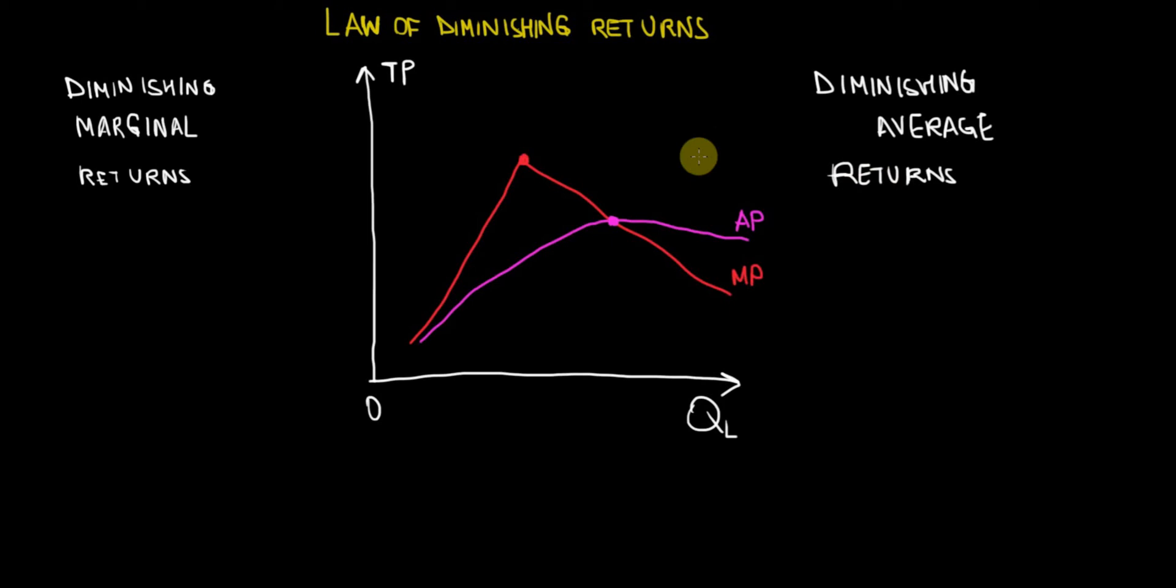Anyway, this was just a theoretical explanation behind this graph, behind the algebra we did on this graph, and these are the two concepts that I would like you to remember: the diminishing marginal returns and the diminishing average returns.